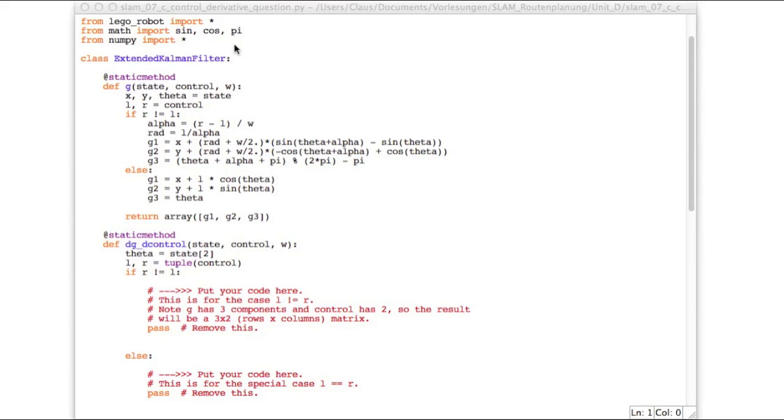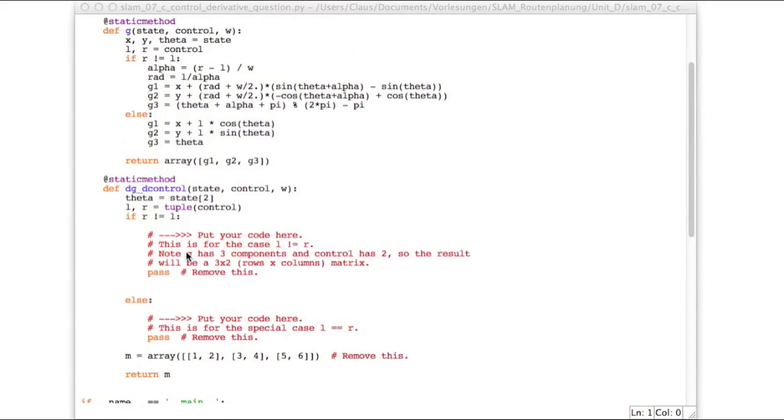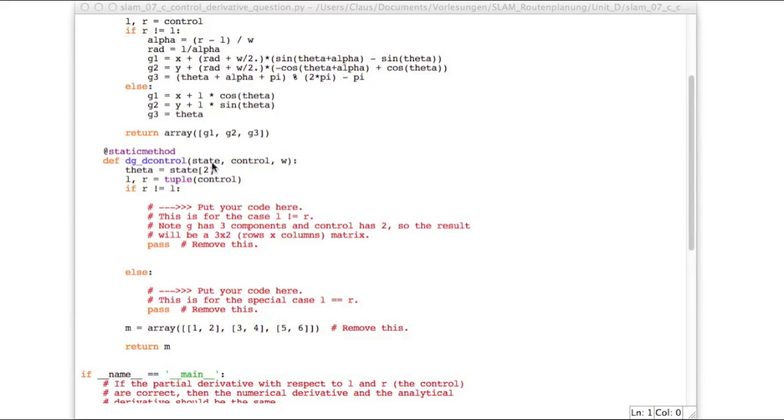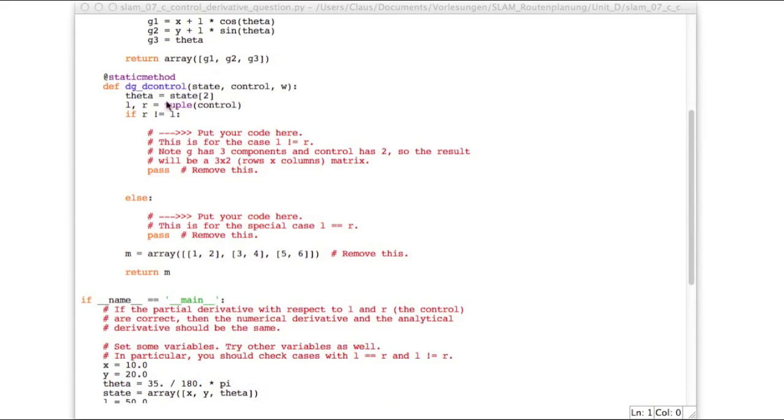So I prepared this SLAM7C control derivative question file for you. And so essentially your task is the same as in the previous case only that the derivative of g you have to take is now with respect to control meaning to l and r and not with respect to the state. And so this is the function you'll have to fill out.